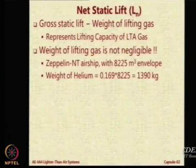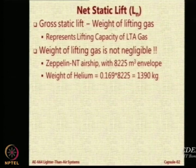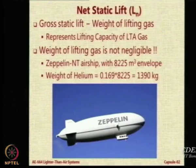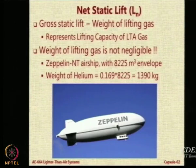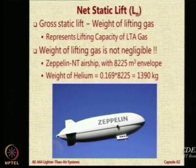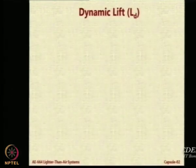The weight of the lifting gas is not a small thing. For example, the Zeppelin NT has around 8,000 cubic meters of envelope, and the weight of its lifting gas is more than a ton — 1,390 kg. So it is not a negligible number. If you ignore the weight of the gas in a calculation, you will end up with a large error. Also, do not do double accounting: some people deduct the net lifting capacity and then also separately deduct the gas weight. This is a very common mistake — the gas weight is already accounted for in the net lifting capacity.